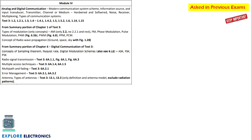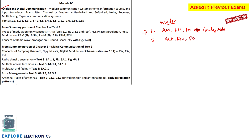Coming to Module 4 — analog and digital communication, radio wave propagation, multipath, fading, and more. The very important question is AM, FM, and PM modulation. You need to understand what modulation is; they may ask you to explain analog modulation schemes with waveforms for AM, FM, and PM. They may also ask digital modulation schemes: ASK, FSK, and PSK. Out of these two, one question will be there for sure.